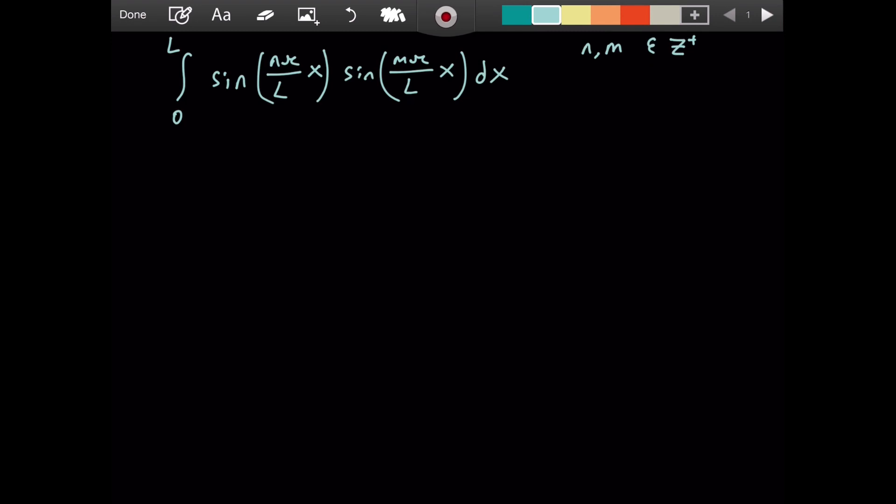I claim that if n is not equal to m, the integral gives 0 all the time. However, if they are equal, we will get L over 2. This is my claim. And this property is called the orthogonality of the sine function.